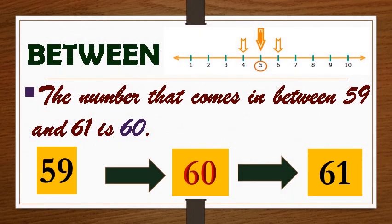What comes in between? The encircled number 5 comes in between 4 and 6. Let's take another example. The number that comes in between 59 and 61 is 60.